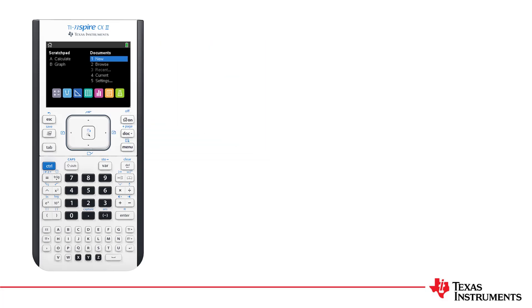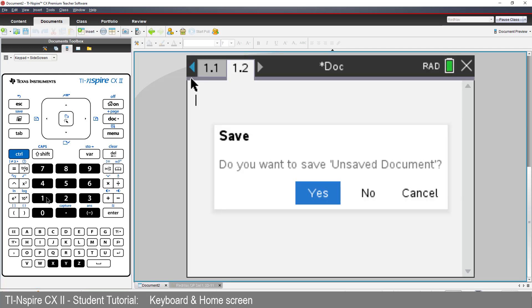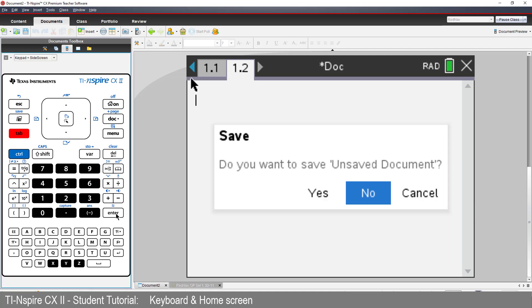So, let's take a moment to practice using some of these keys. From the home screen, select New. I'll press the 1 key on the keyboard. I had a document open that I don't need anymore. So, I'll press the Tab key to navigate to No and press Enter.